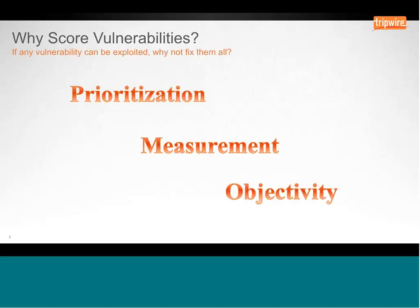And finally, objectivity. There's a lot in the security world that is subjective. Vulnerability scoring helps you remove some of that subjectivity — helps you remove the 'I feel we need to fix this' from the equation, so that you can focus on what you really need to fix and know that you're making a sound decision.